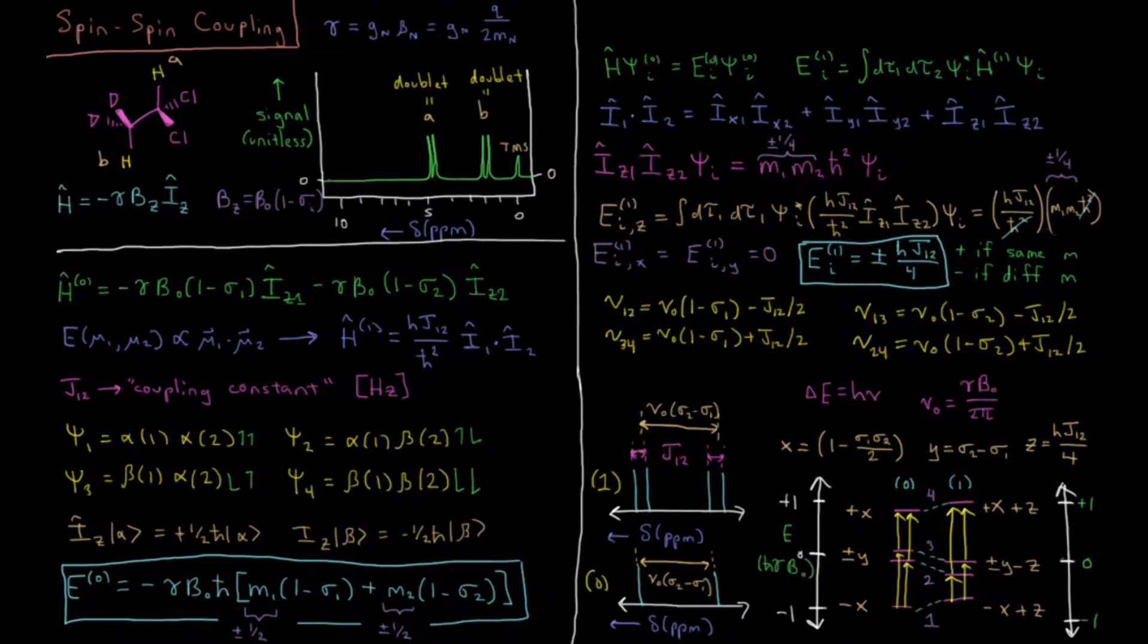In this video we're going to talk about the origins of spin-spin coupling in NMR spectra. So let's suppose we have this molecule here, and we want to take its NMR spectrum, so this would be a dichloro and dideuterated ethane molecule.